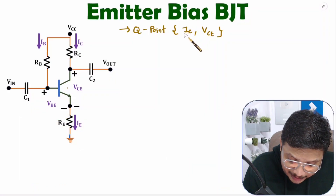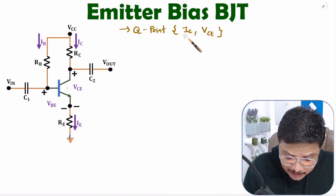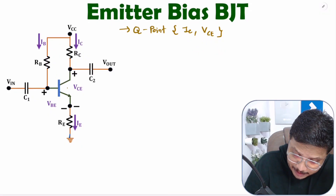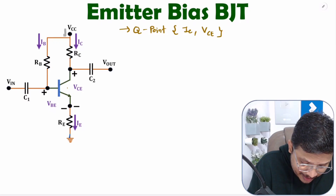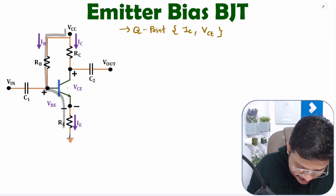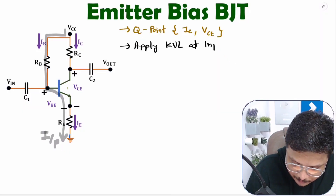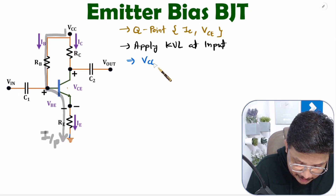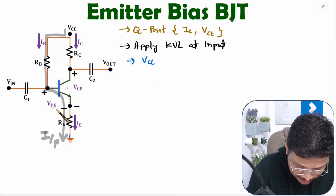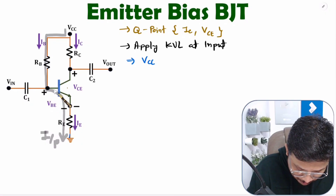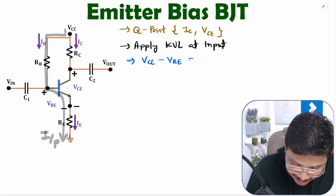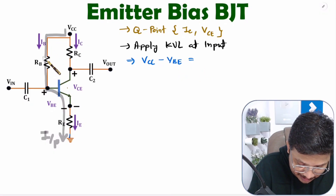Now let us derive output current and output voltage equations. To derive this, first we need to apply KVL at the input side. In this loop we have voltage VCC, and VBE is happening from plus to minus, so we write minus VBE. That equals the voltage drop across elements RB and RE in this loop.